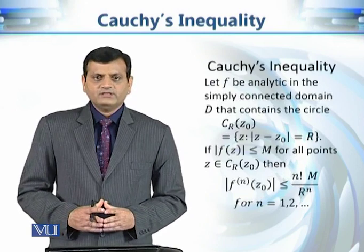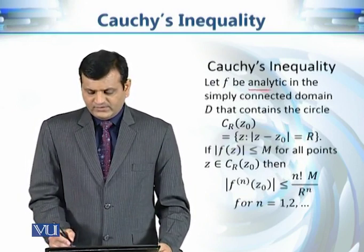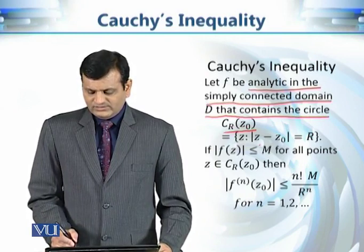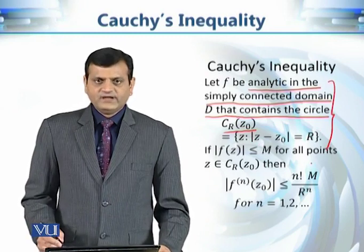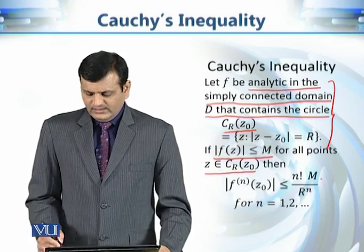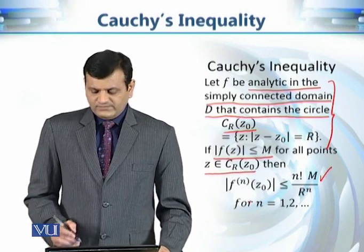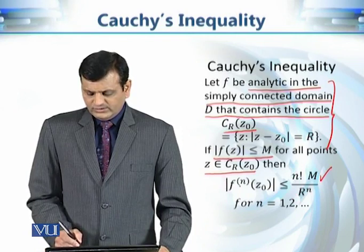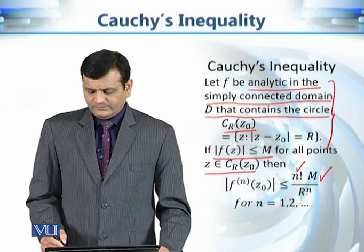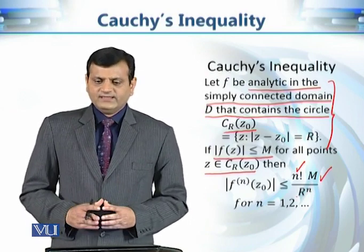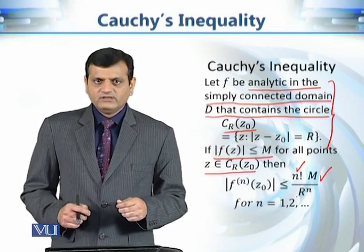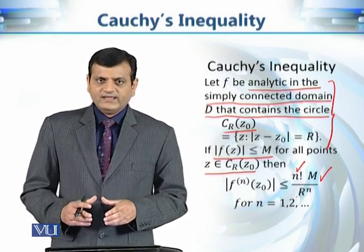Let's begin with Cauchy's inequality. It says that if we have an analytic function in a simply connected domain D, and this domain D contains the circle of radius r and center z₀, and furthermore the modulus of f(z) is less than or equal to M for all points on this circle, then we have the following upper bound for the modulus of the nth derivative at point z₀: it is less than or equal to n! · M over r raised to power n.